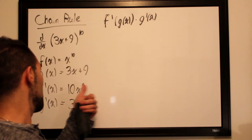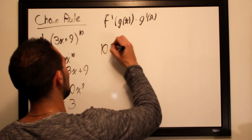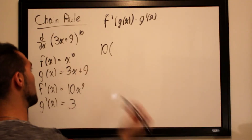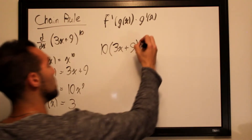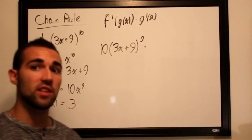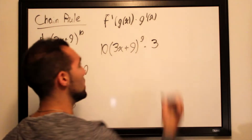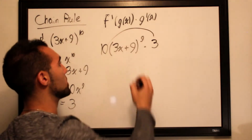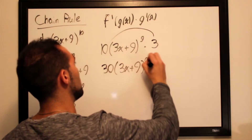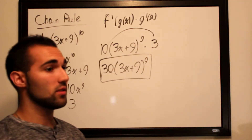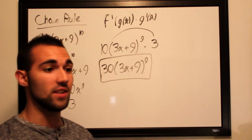Substituting g(x) wherever we see x in f', we get 10·(3x + 9)^9. Then we multiply by g'(x) = 3, giving 30·(3x + 9)^9. Distributing this would be very large and messy, so we keep it in this compact form. That is our final answer for the derivative of (3x + 9)^10.